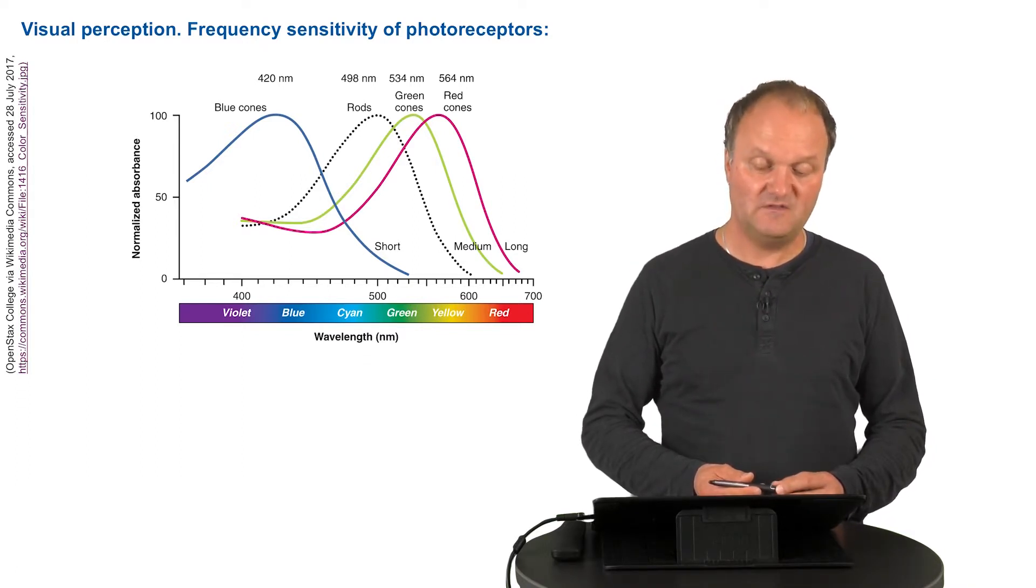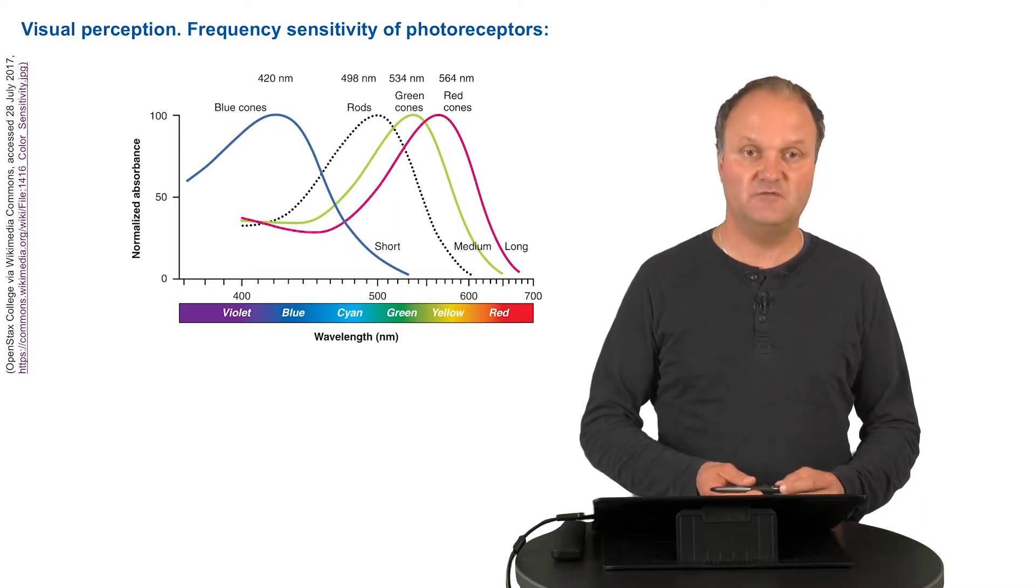Especially, three receptors for the different colors are all activated, but to a different degree. And this combination of information which comes from these three types of receptors actually helps you to perceive all types of colors.